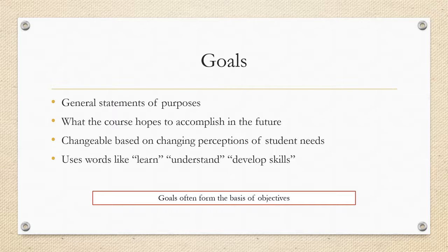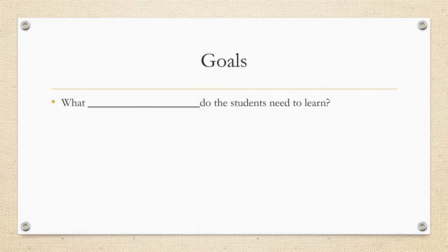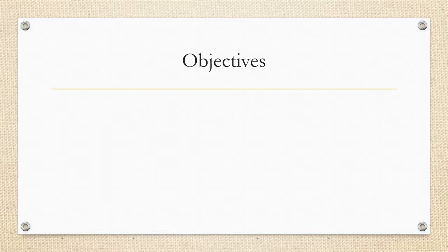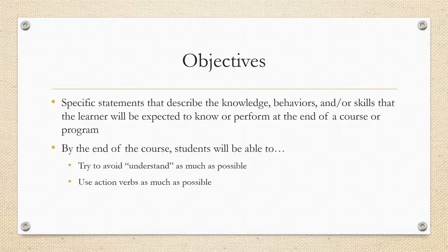Objectives specifically try to avoid those vague terms we saw in goals — terms like 'learn,' 'understand,' and 'develop skills.' Instead, objectives want to use action verbs as much as possible.